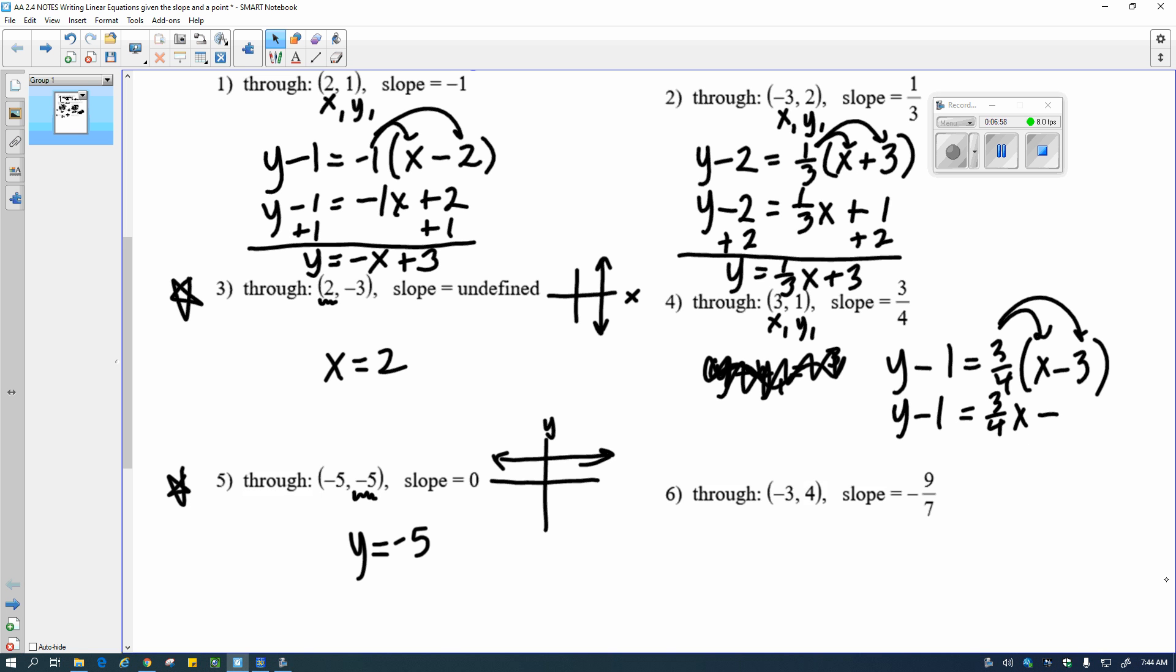So I distribute y minus 1 equals 3/4 x. What is 3/4 times 3? This is, again, where your calculator with fractions might come in handy. 3/4 times 3, 9/4. Nice job. Cyrus knows his fractions. Good work. So 3/4 times 3. That's not a pretty fraction, and it's okay. I'm okay with it. You should be okay with it. But then I'm going to add 1, add 1. Again, this is where your calculator might come in handy. I'll end up with y equals 3/4 x. Are you sure? Because it's a negative 9/4. So negative 9/4 plus 1. Negative 9/4 plus 1. So that'd be negative 9/4 plus 4/4, if I'm going to do it by hand. Negative 5/4, yeah. And so then that's my final answer.